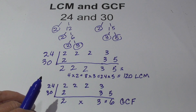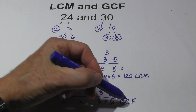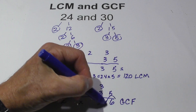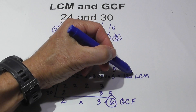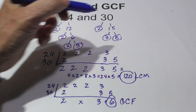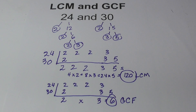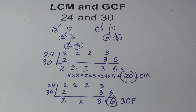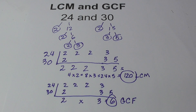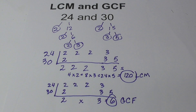In summary, the GCF is 6 and the LCM is 120 for 24 and 30. Thanks for watching. Moomoo Math uploads a new math and science video every day — please subscribe and share.